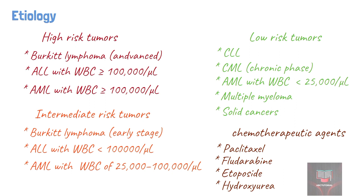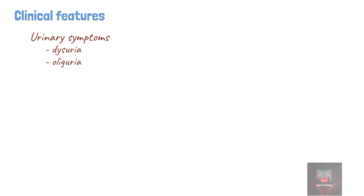In tumor lysis syndrome, a constellation of clinical signs and symptoms may develop prior to the initiation of chemotherapy, but more commonly it occurs within 72 hours after administration of cytotoxic therapy. There could be presence of urinary symptoms such as dysuria or painful urination, oliguria or reduction in urine output, and flank pain. Symptoms of hypocalcemia include anorexia, vomiting, and seizures.